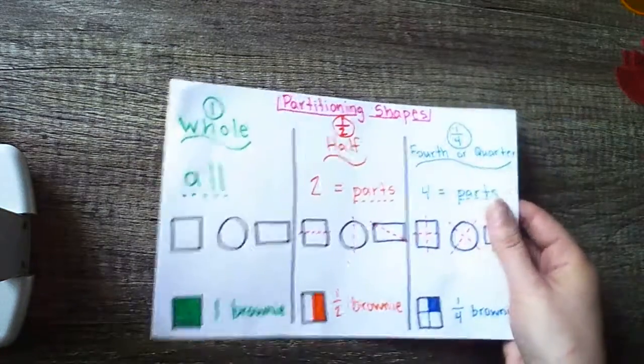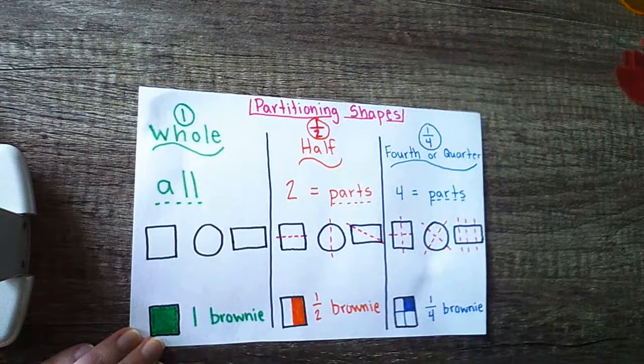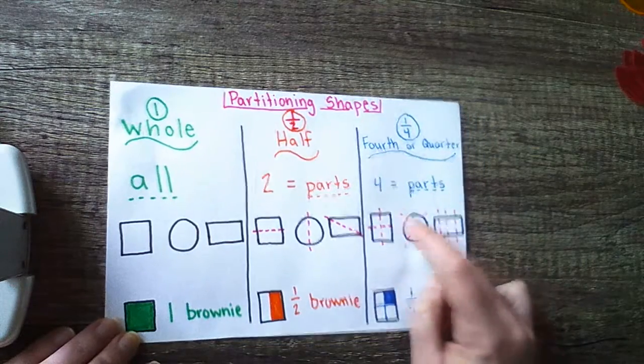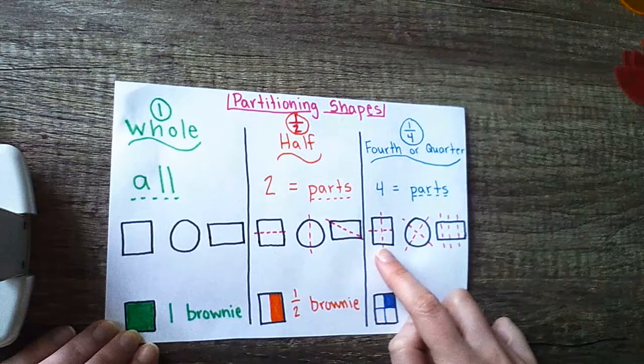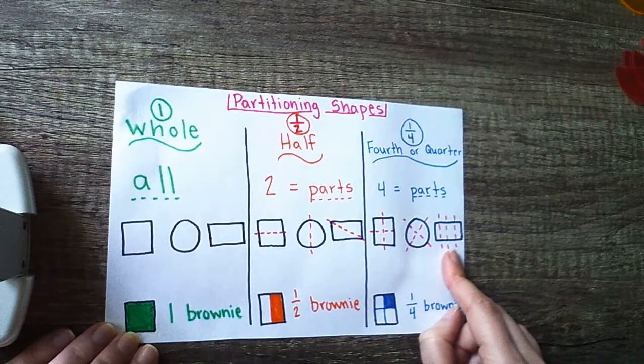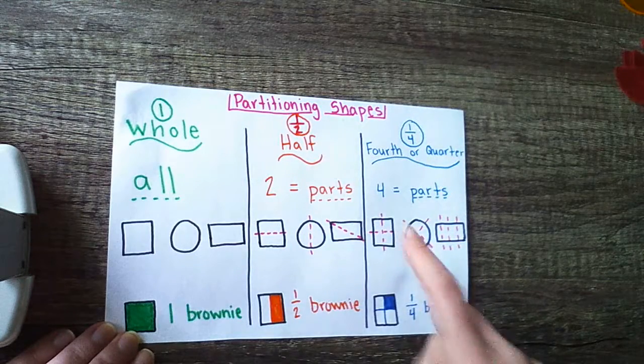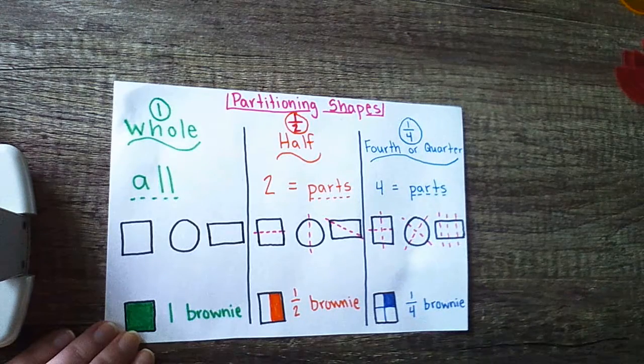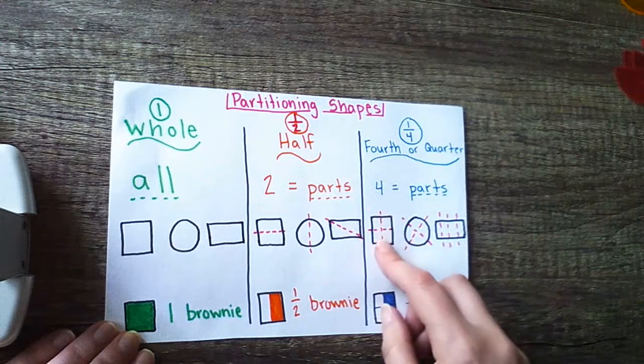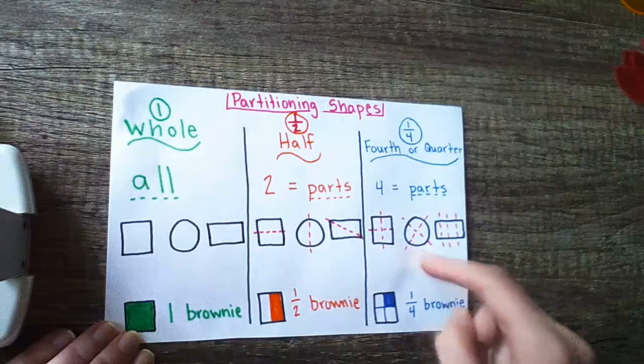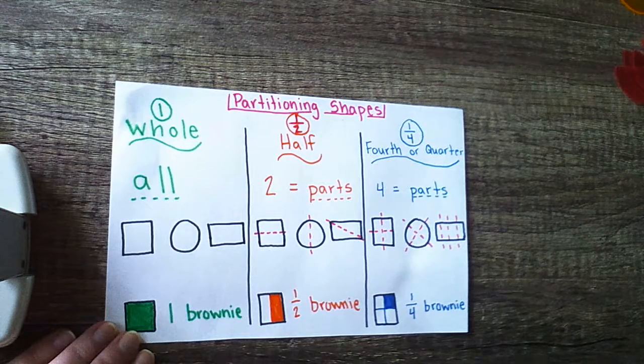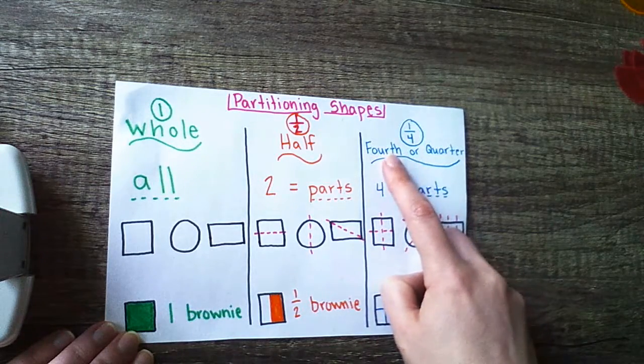Let's take a look at how that is different from halves. We know that a whole is all of the shape. Half, you have two equal pieces. When we're talking about fourths or quarters, we have four equal pieces. Notice how our square, our circle, and our rectangle are all partitioned or cut into four equal parts. Those red partition lines are not necessarily in the exact same spots. That's okay. You can partition top to bottom and side to side. You can do an X. You can just do vertical partitions. As long as after you make your partitions, you have four equal parts or fourths or quarters.